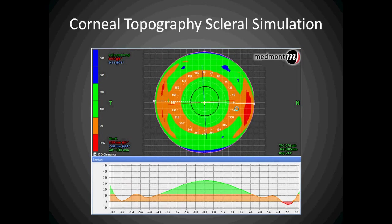This allows the Medmont software to generate a theoretical scleral lens. We drop that lens on the eye and can observe the tear film that exists 360 degrees around using the white axis line. By taking this handle and rotating it around, you are able to observe the fluid layer underneath the lens.